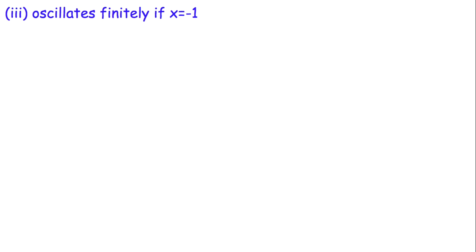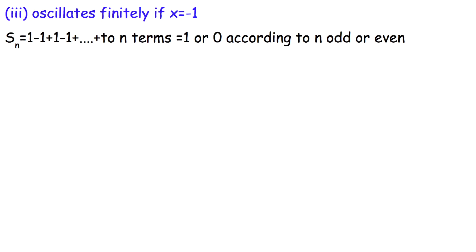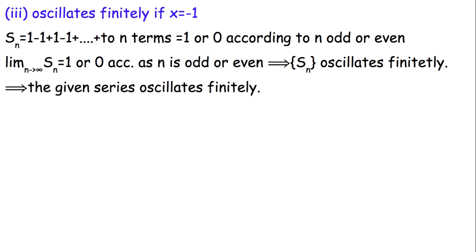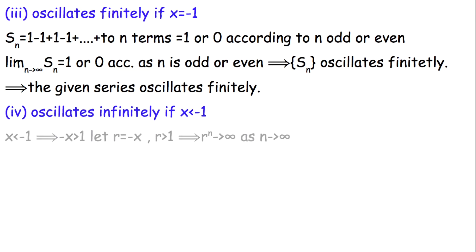Now let's discuss Case 3: oscillating finitely. If x equals -1, multiplying by -1 alternates the sign of each term. Summing up to n terms gives either 1 or 0 depending on whether n is odd or even. Therefore the sequence oscillates finitely, and the given series also oscillates finitely.